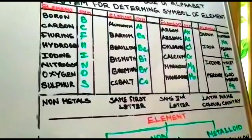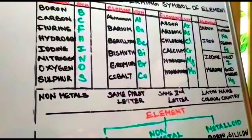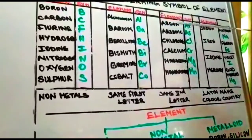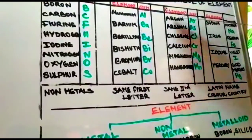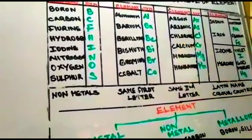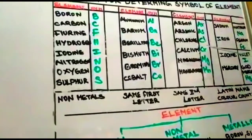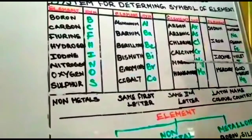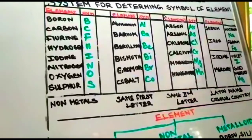There are few elements where the first two letters are similar. In that case, we represent the element using the first letter and the second or third letter. For example, argon uses Ar and arsenic uses As because both have the first two letters similar. So we use first and second letter for argon, but first and third letter for arsenic. Similarly, magnesium uses Mg and manganese uses Mn.